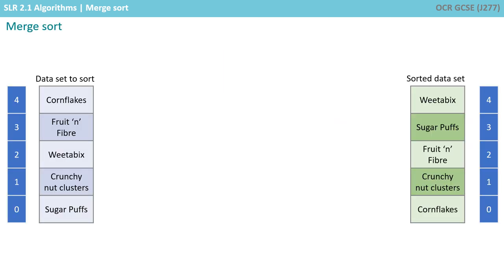Here's a dataset of breakfast cereals. The original data to sort is shown on the left, and the sorted data that we're trying to achieve is shown in green on the right. The object is to put them in alphabetical order with the lowest one at the bottom: Cornflakes, Crunchnut Clusters, Fruit and Fibre, Sugar Puffs, and Weetabix at the top. We're now going to go through the steps of the algorithm to see if we can get to the sorted dataset.